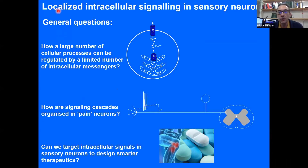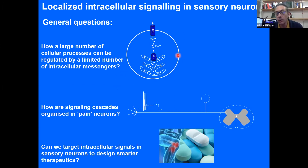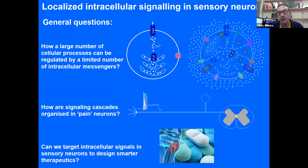I'll start by introducing the general thinking that led up to this investigation. We are interested in localized intracellular signaling in sensory neurons. A general question is how a large number of cellular processes can be regulated by a limited number of intracellular messengers. In this simplistic cartoon, we have a cell with a calcium-activated ion channel in the plasma membrane, activated by calcium release through the IP3 receptor from the endoplasmic reticulum. But reality is in fact much more complicated.